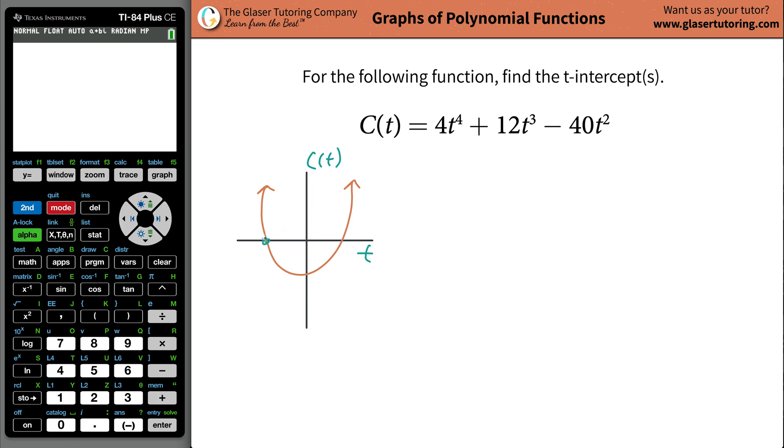The x or the t intercepts will be then the locations where it crosses that particular axis, or the horizontal axis. Now, it turns out that even in this picture, you know one unique thing about those two unique points.